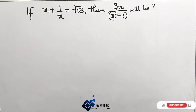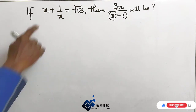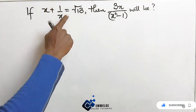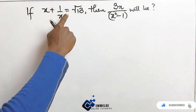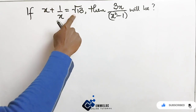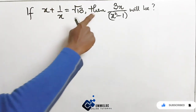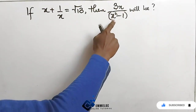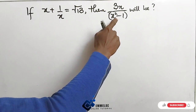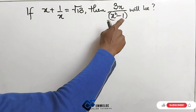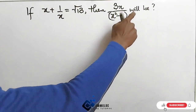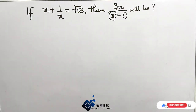Welcome to Emelac Online Tutorial. Now before us, it is a question that says: if x plus 1 over x equals the square root of 13, then 3x all over x squared minus 1, in brackets, will be?